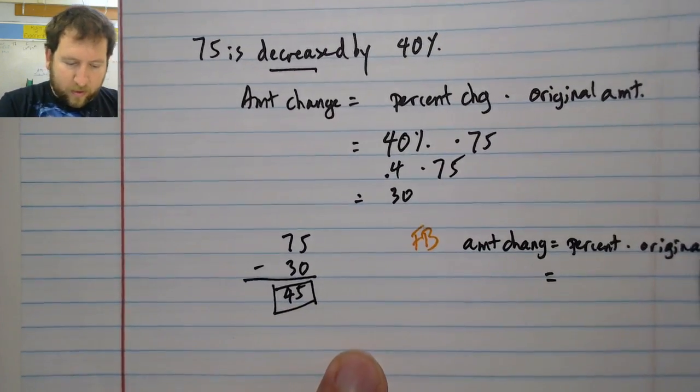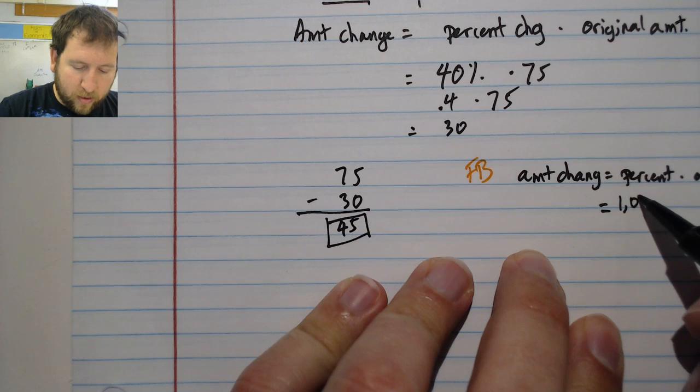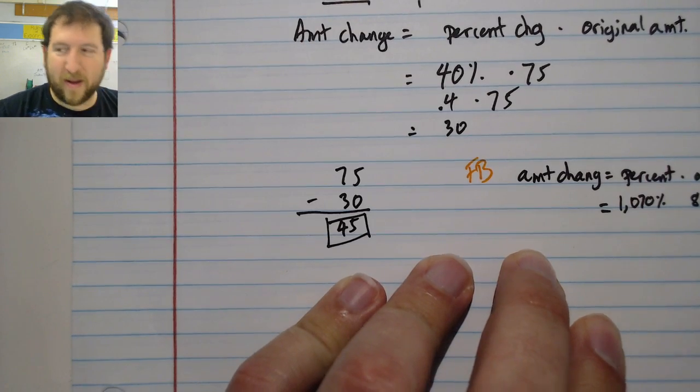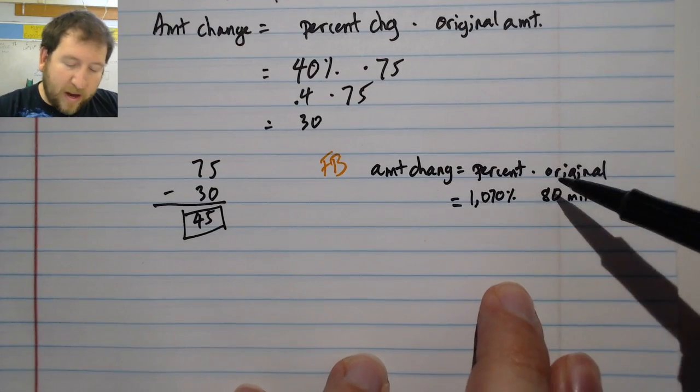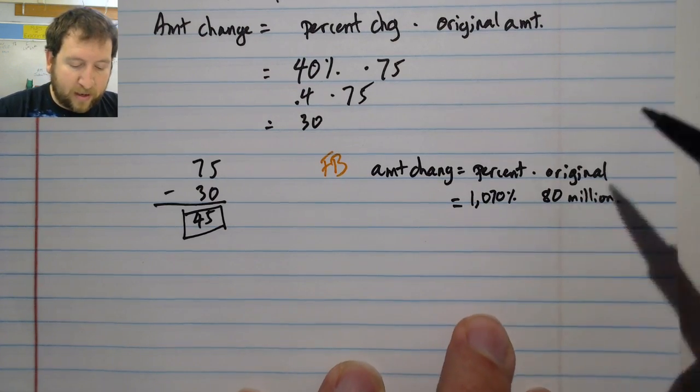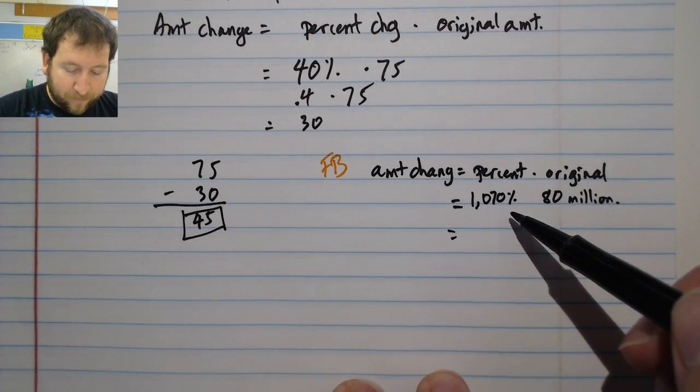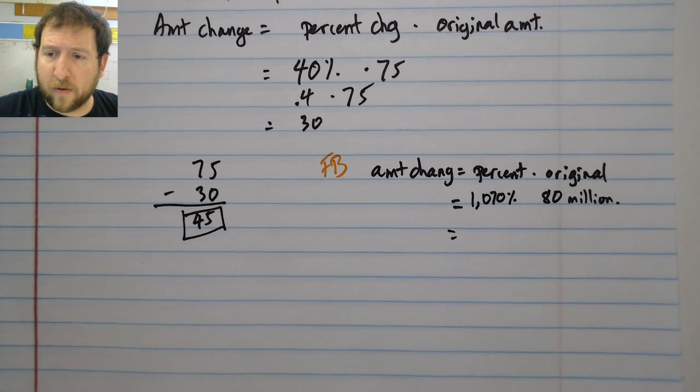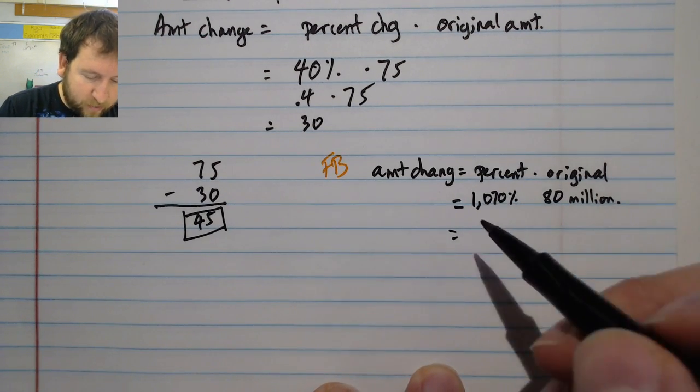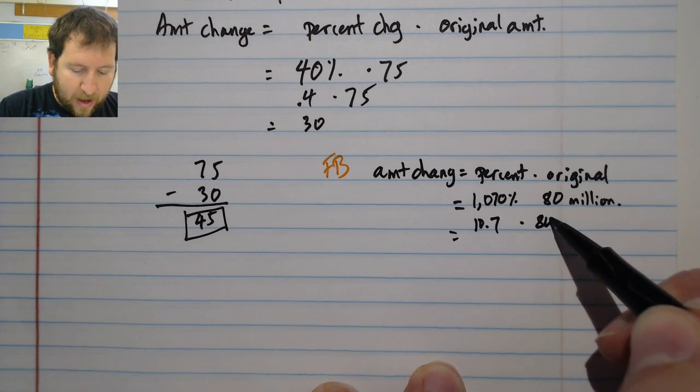This is going to be 1,070 percent times 80 million. I can write this as 80 million or with all the zeros written out. It doesn't really matter as long as I remember that this 80 is 80 million and not just a regular 80. I need to turn this into an actual number because I can't use this as a percent. I'm going to take my decimal point and move it two places to the left, which will give me 10.7 times 80 million.